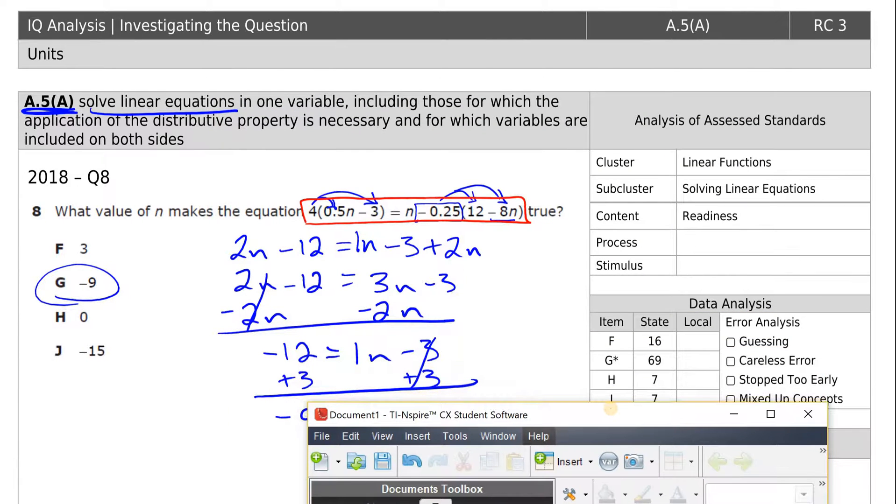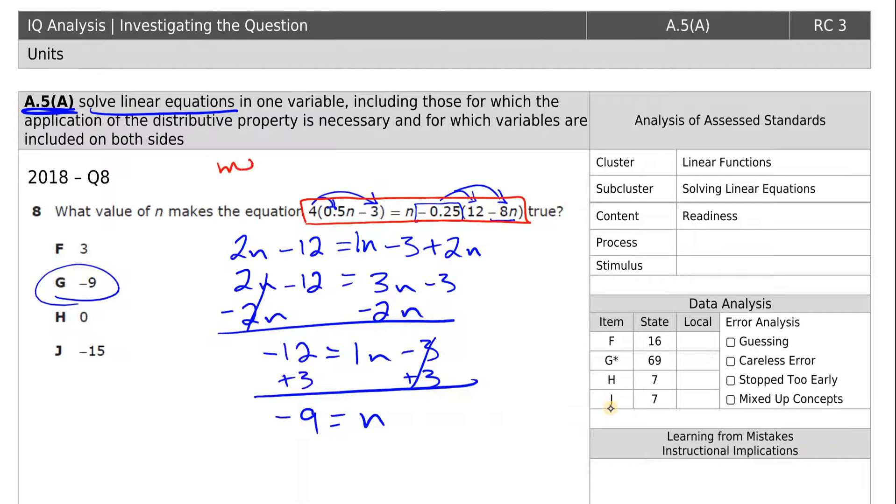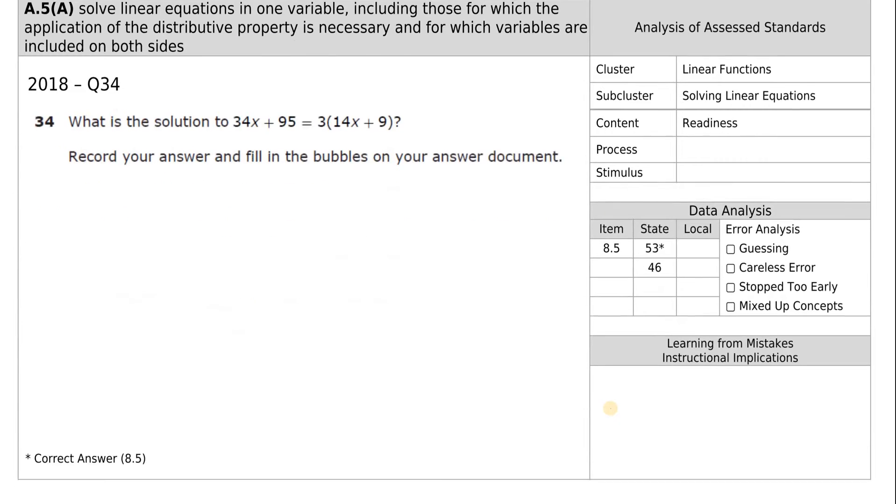Let's go ahead and write down what those steps were again. That was menu, three for algebra, one for nsolve. And then you write it out and you have to put comma, whatever the letter is. Many times it's x. Let's move on to the next question.